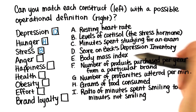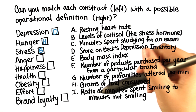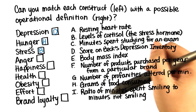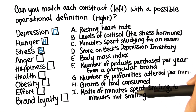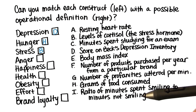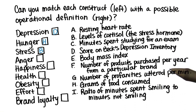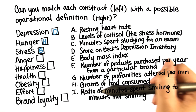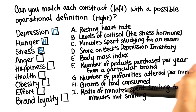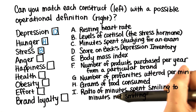For anger, this could either be number of profanities uttered per minute, or even ratio of minutes spent smiling to minutes not smiling. The difference is that ratio of minutes spent smiling to minutes not smiling would be a better measure of happiness, because if it's greater than one, then you're spending more time smiling. So the higher this ratio, the happier you would be, making it a better measure of happiness.